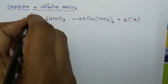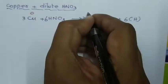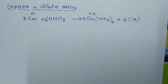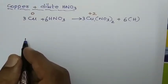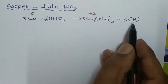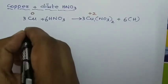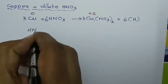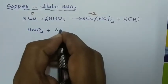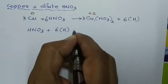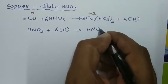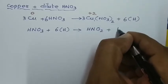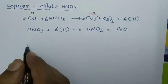In the first reaction, copper undergoes oxidation. Elemental copper has an oxidation state of 0. When treated with nitric acid, it is converted into Cu²⁺ ion. Moving from left to right, the oxidation number increases, so this is called oxidation. In the secondary reaction, this nascent hydrogen reduces nitric acid. When HNO₃ is reduced with 6 nascent hydrogen, nitric acid is reduced into nitrous acid (HNO₂) plus H₂O.